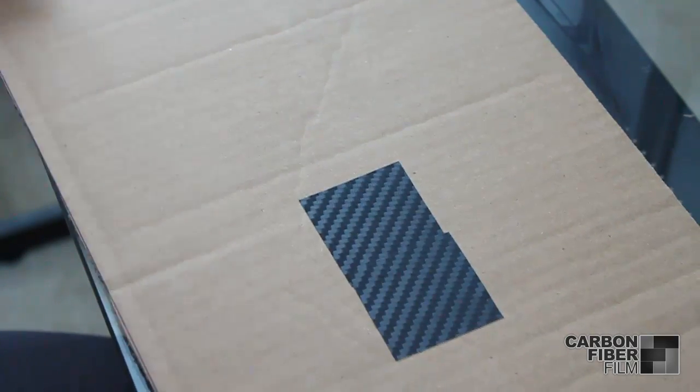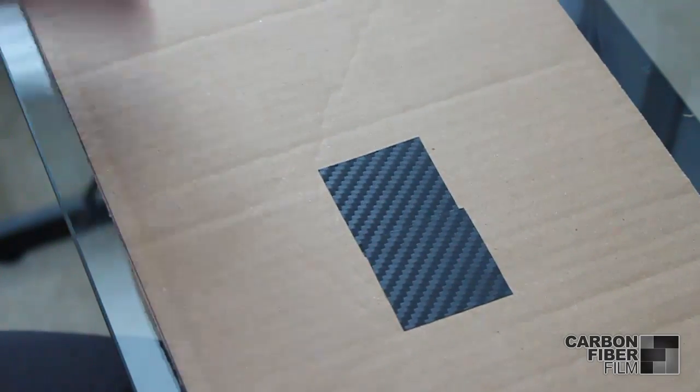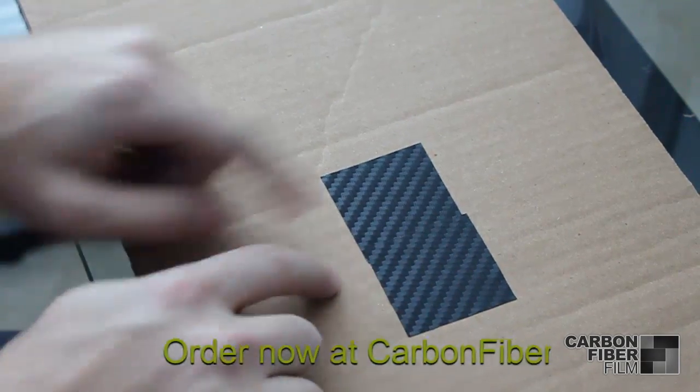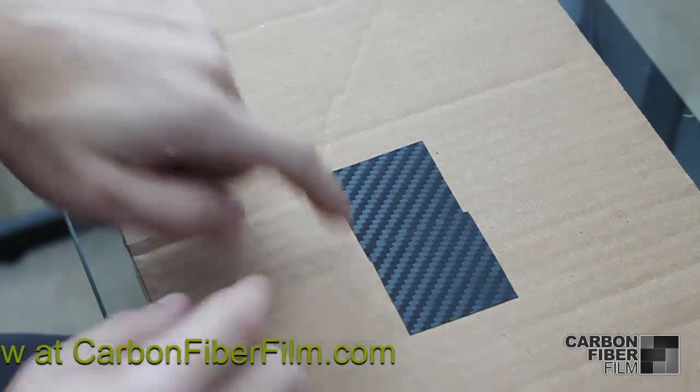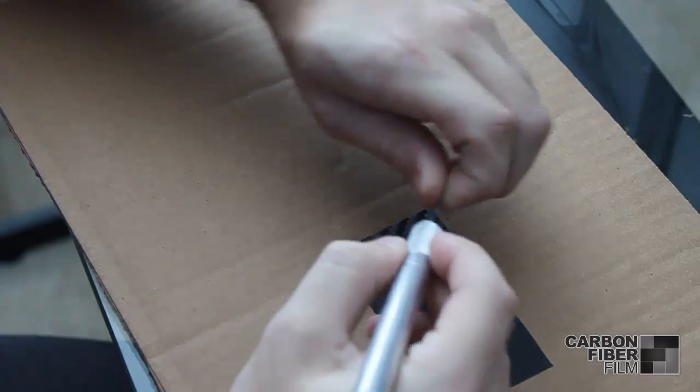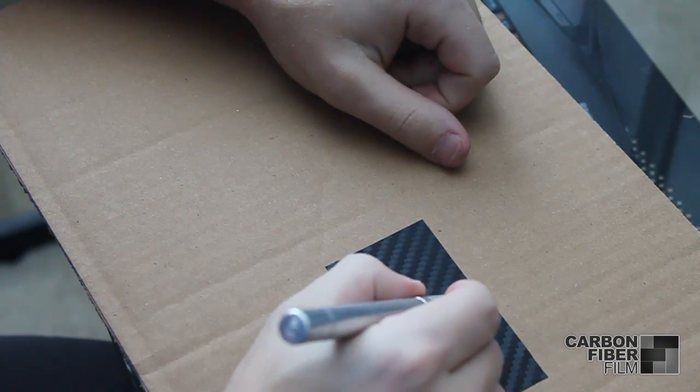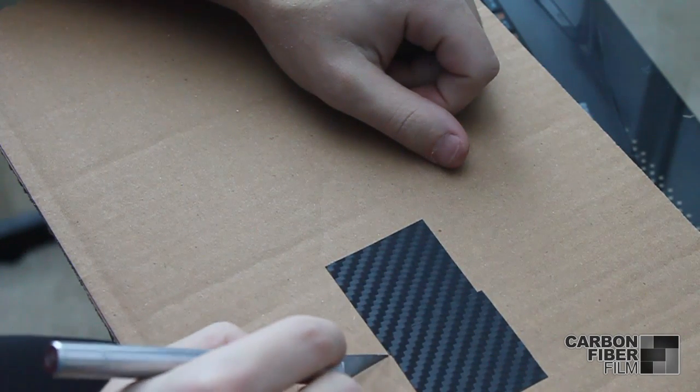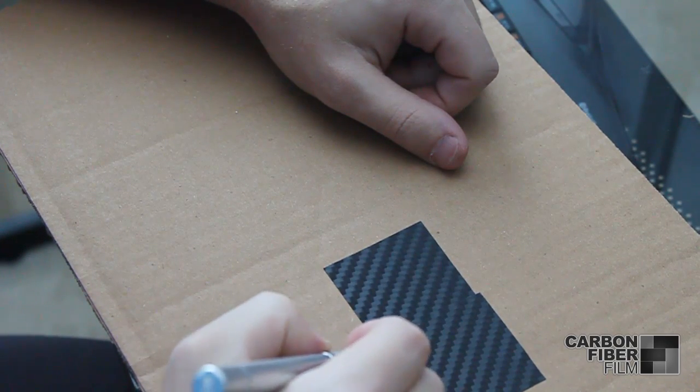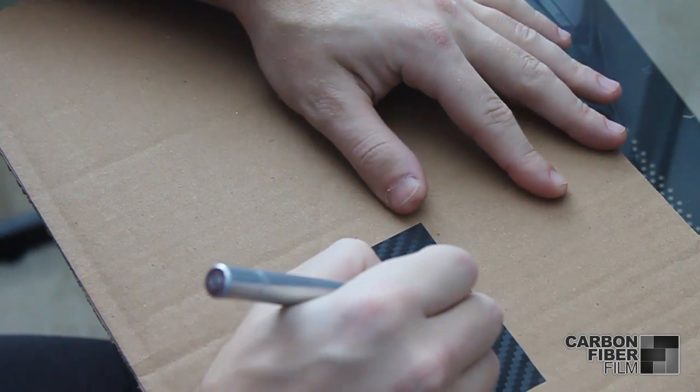You see here that the pattern extends, but you have a seam that's overlaid over top. What you want to do is take an exacto knife. You don't want to cut all the way where the other one's underneath, but in the middle of both of these, all the way down.